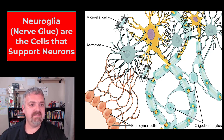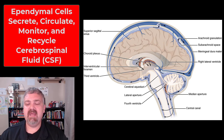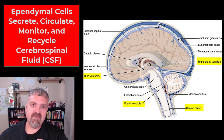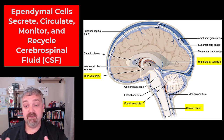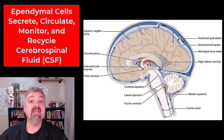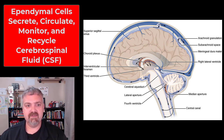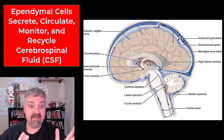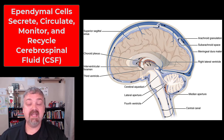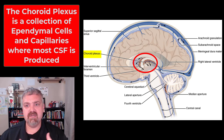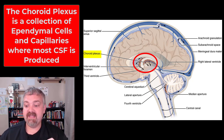We are going to start with the central nervous system. There are four types here: ependymal cells, astrocytes, microglial cells, and oligodendrocytes. Let's start with ependymal cells. When you hear ependymal cells, think cerebral spinal fluid. The four ventricles in the brain and the central canal that runs down the center of the spinal cord are full of cerebral spinal fluid, and they are lined with ependymal cells that form an epithelium called the ependymal. Everything associated with cerebral spinal fluid is handled by ependymal cells — some secrete it, some circulate it, some monitor its composition, and others have stem cells that can repair it. The choroid plexus is the combination of vascular supply and ependymal cells that plays a major role in production of cerebral spinal fluid.